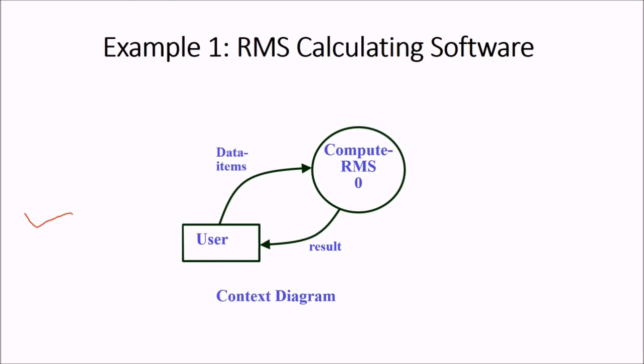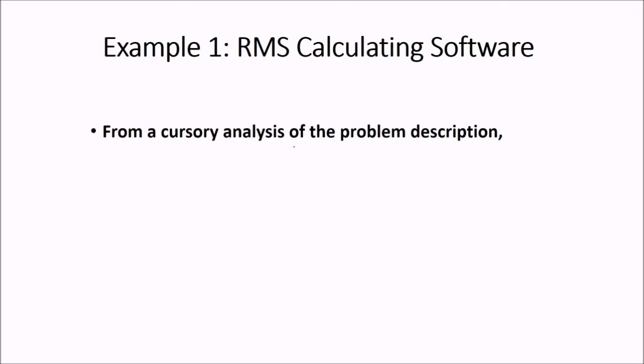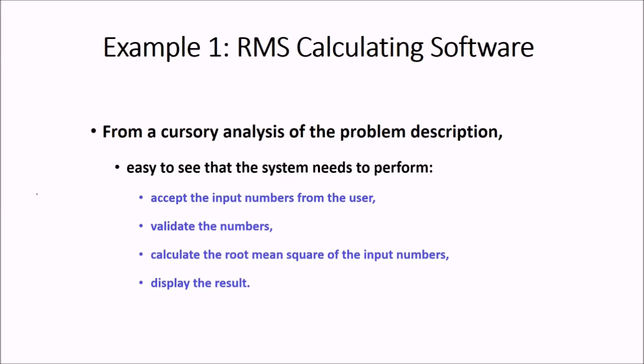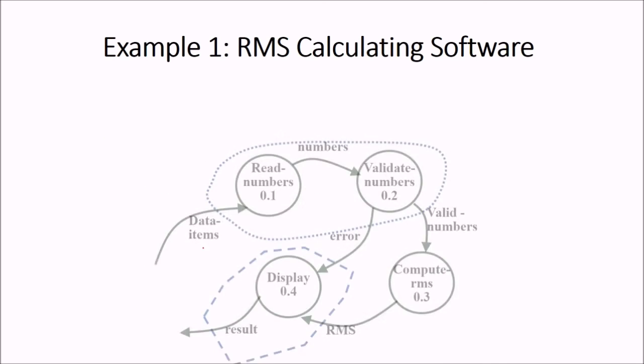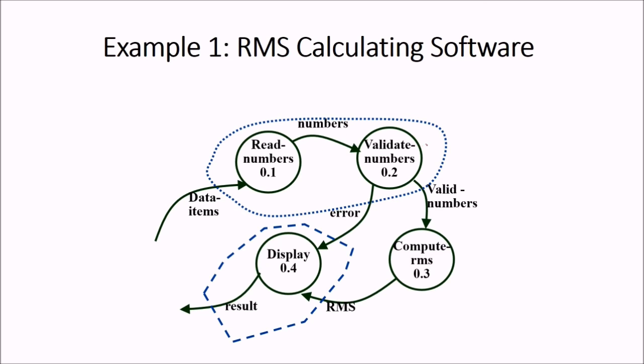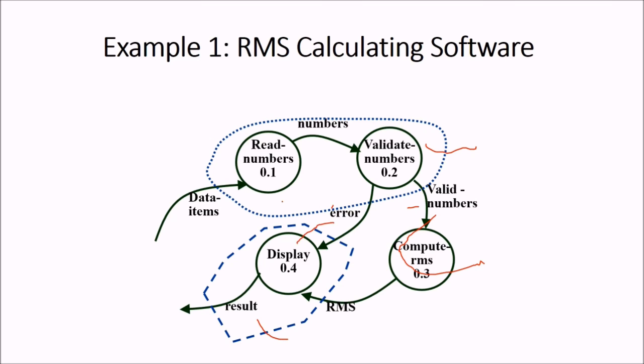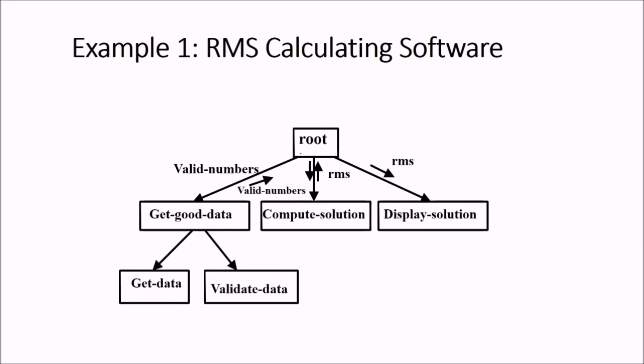Let us take an example. RMS calculating software. You know this is level 0 DFD and this is user compute RMS context diagram. Result has been shown to user and the data items has to be inputted from the user which is inputted to the compute RMS 0. The problem description as far as cursory analysis is concerned. This is quite easy to see that the system needs to perform. First accept the input numbers from the user. Then we have to validate the numbers. We need to compute the root mean square of input numbers and following display the result. So this is how we do it. This is the first part of validating and reading. This is the second part of displaying. And in between we have computing of RMS. And when we see this level 1 DFD I just showed you, we identify read numbers and validate numbers bubbles as the afferent branch. These are the afferent branch. And we display as the efferent branch. These are the efferent branch. So we make it like this, same stuff.